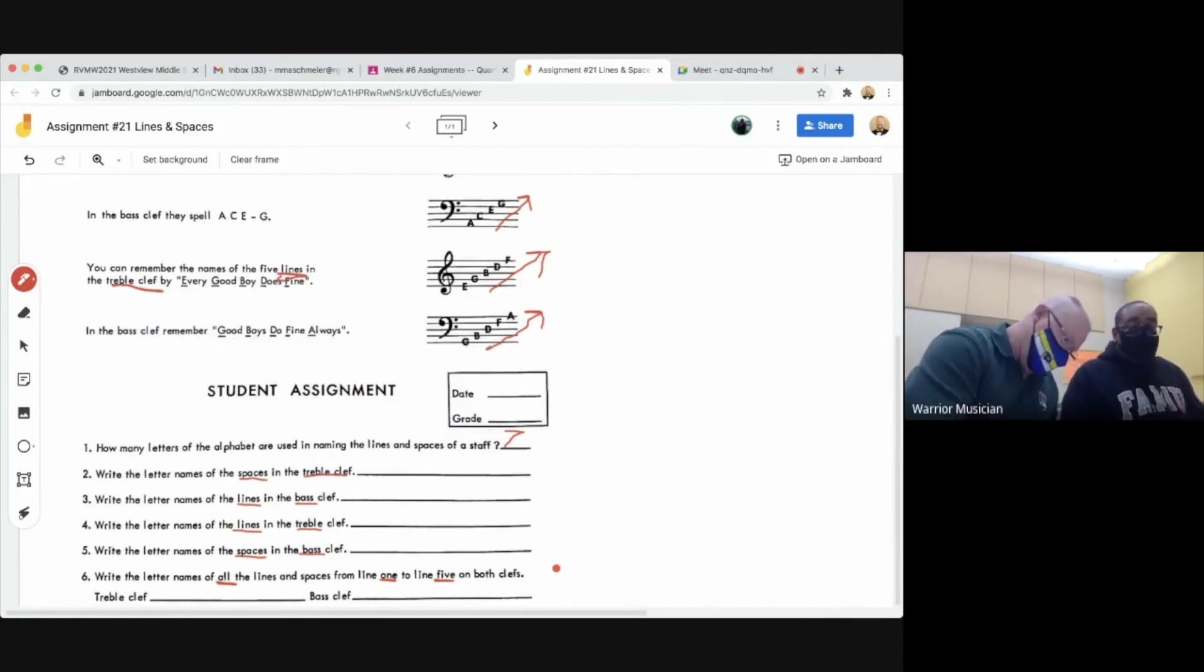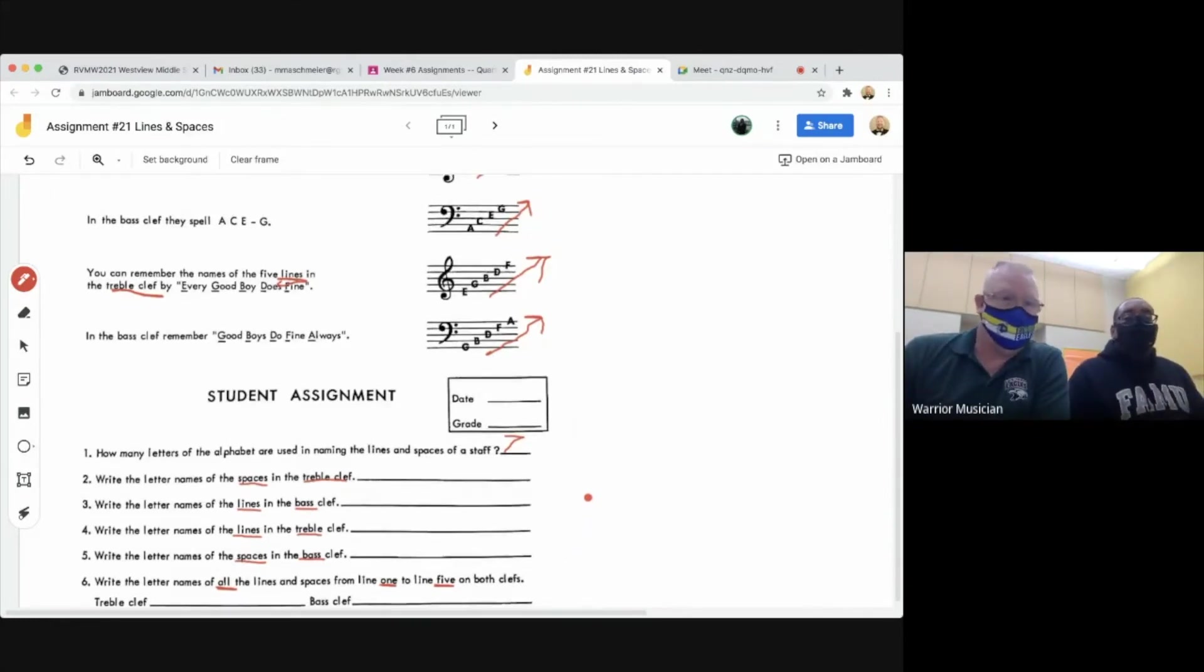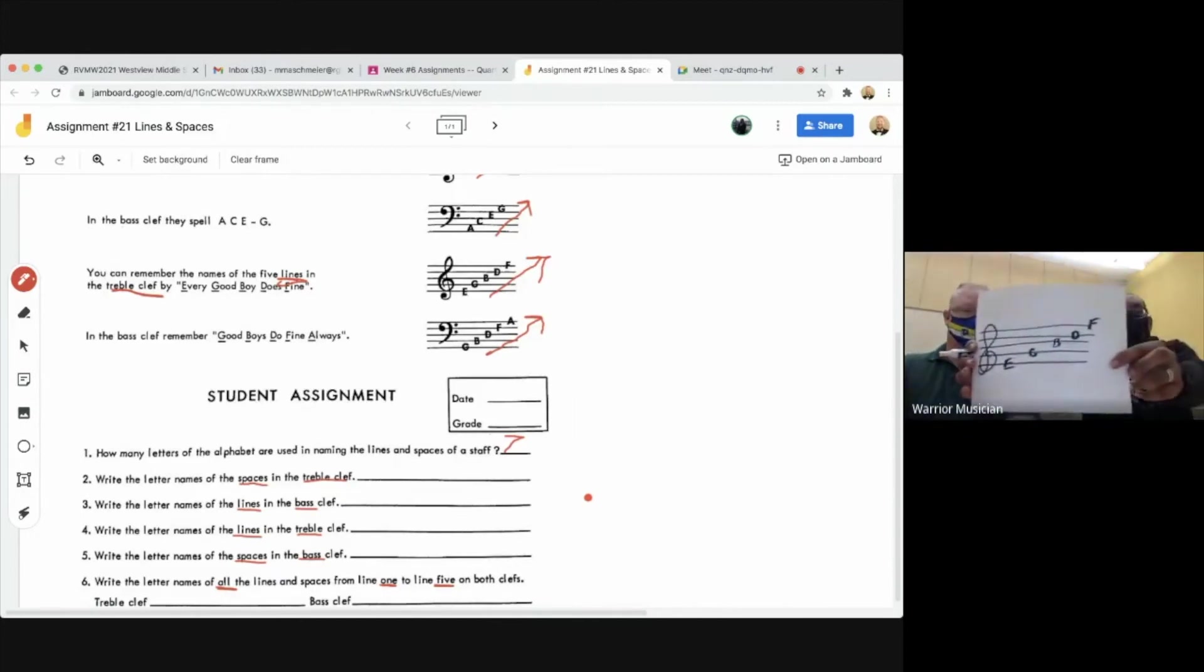So who can turn their microphone on and remind us again for the lines, the placement of the notes or the letter names for the treble clef for lines? What's the saying? Every good boy does fine. Thank you. Good job. So that makes the bottom line an E all the way up to the top line, which would be an F. Just like that, guys.